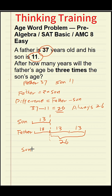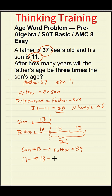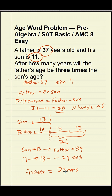Therefore, when the father's age is three times the son's, the son must be 13. Right now the son is 11. From 11 to 13 is two years, so in two years the father's age will be three times the son's age. And here's the golden rule in age problems: the age difference never changes.